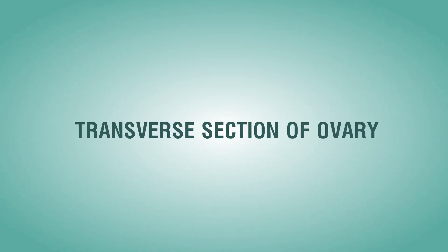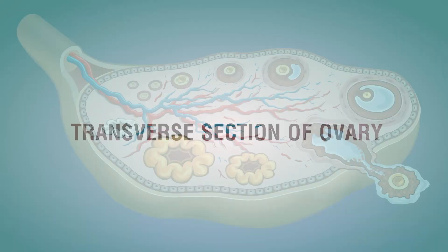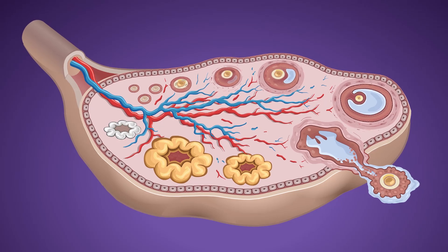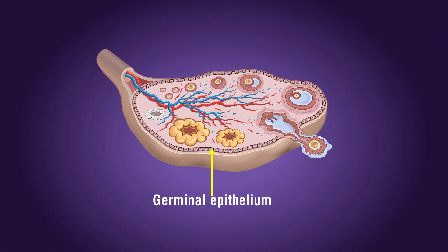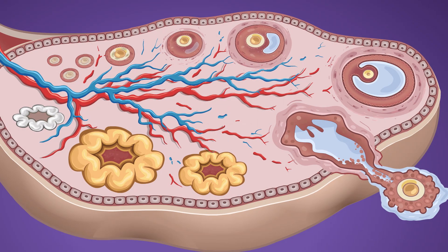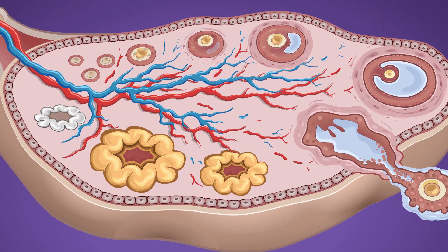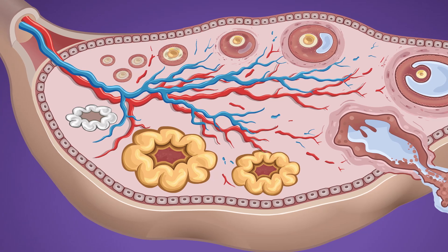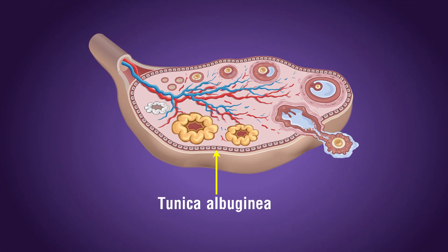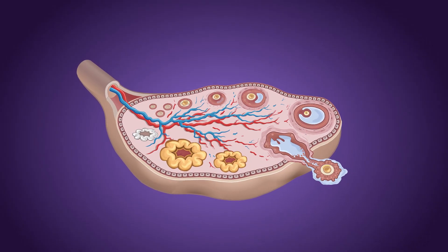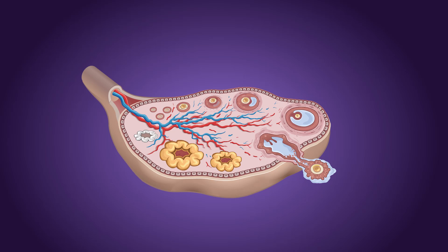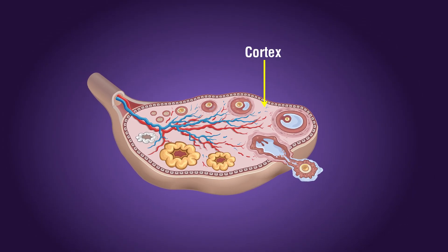Transverse section of ovary: The entire ovary is covered by a capsule made up of cuboidal epithelial cells called the germinal epithelium. On the inside of the ovary, next to the germinal epithelium, there is a thick layer of fibrous tissue called tunica albuginea. These epithelial layers enclose the ovarian stroma, which is divided into two zones: a peripheral cortex and an inner medulla.